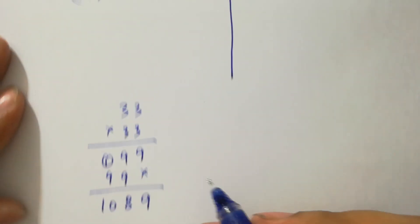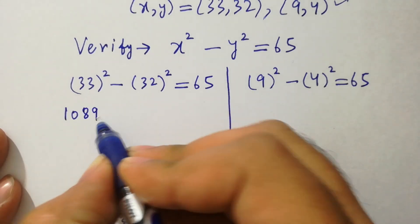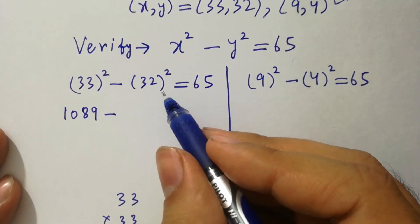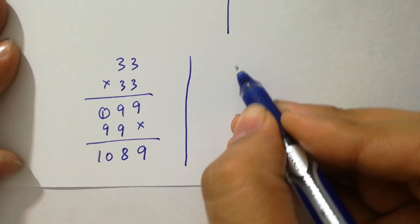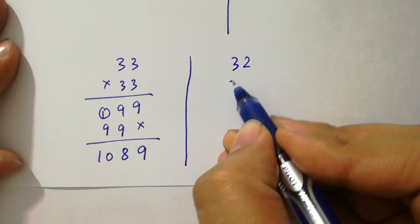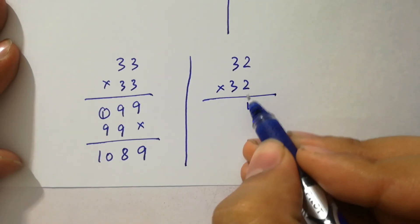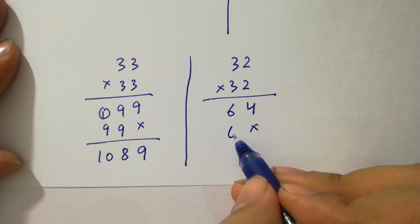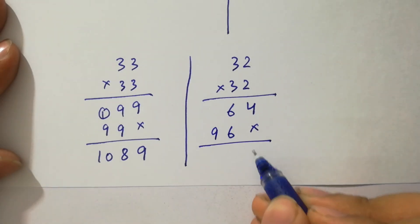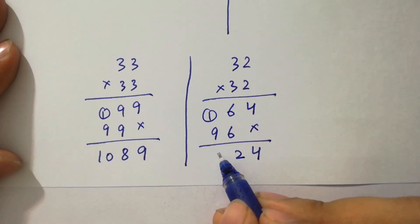So this is 1089 minus and now 32 times 32. It will be 2 times 2 is 4, 2 times 3 is 6, 3 times 2 is 6, 3 times 3 is 9. 4 as it is, 6 plus 6 is 12, 2 here, 1 carry, 9 plus 1 is 10.